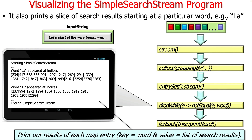dropWhile and takeWhile allow you to do various kinds of short-circuited operations that will either start with the beginning of a matching predicate or end with the matching predicate. For example, we'll print out the results of each entry in a map where the key equals a word and the value equals the list of search results.